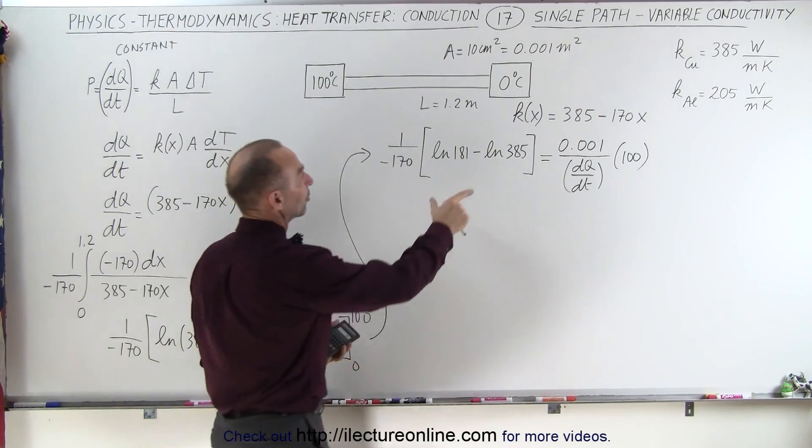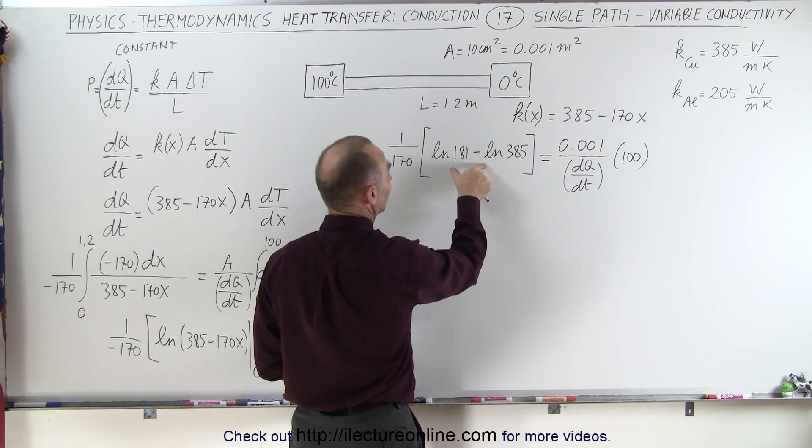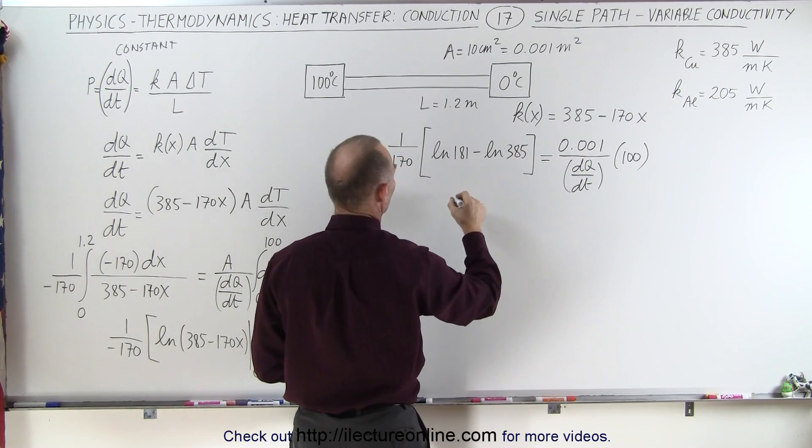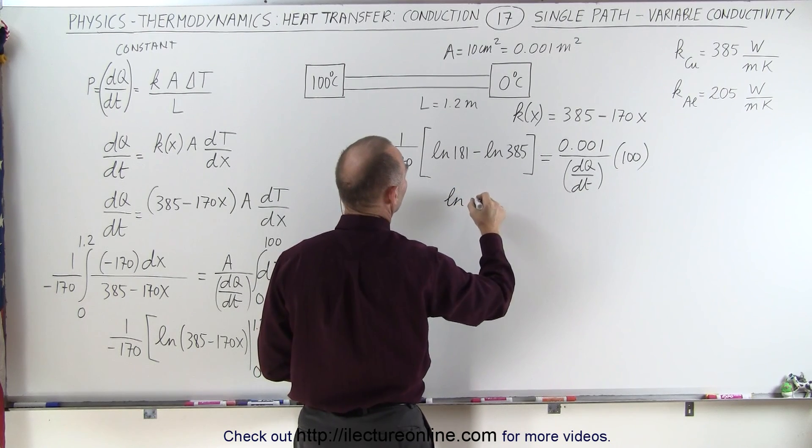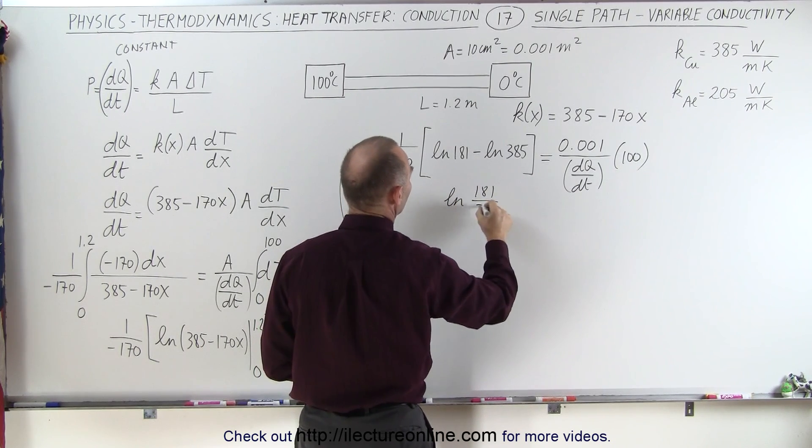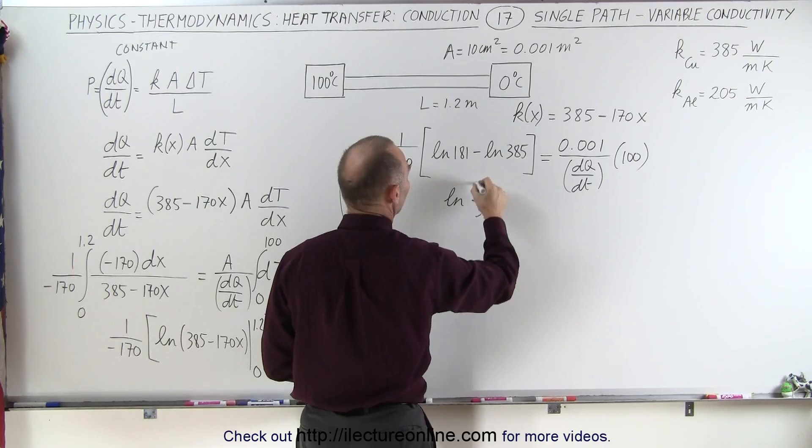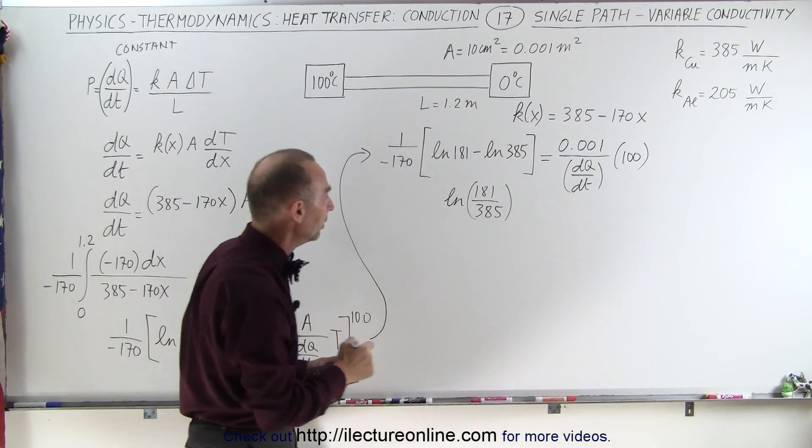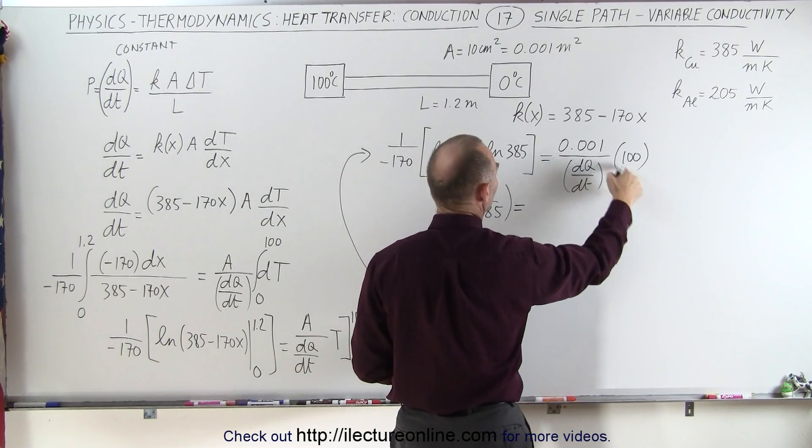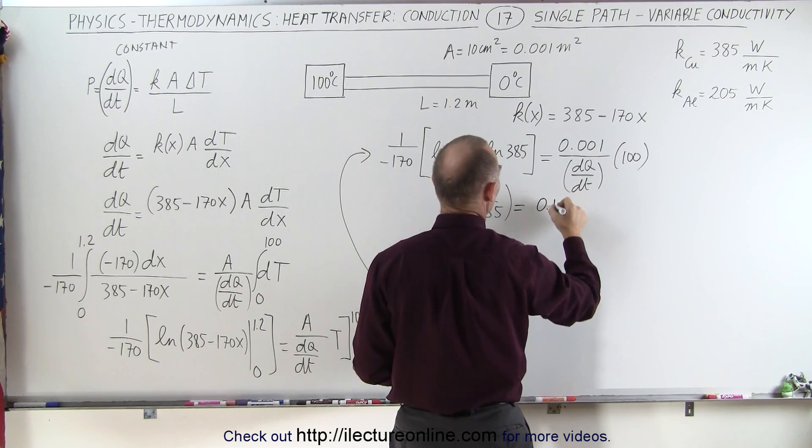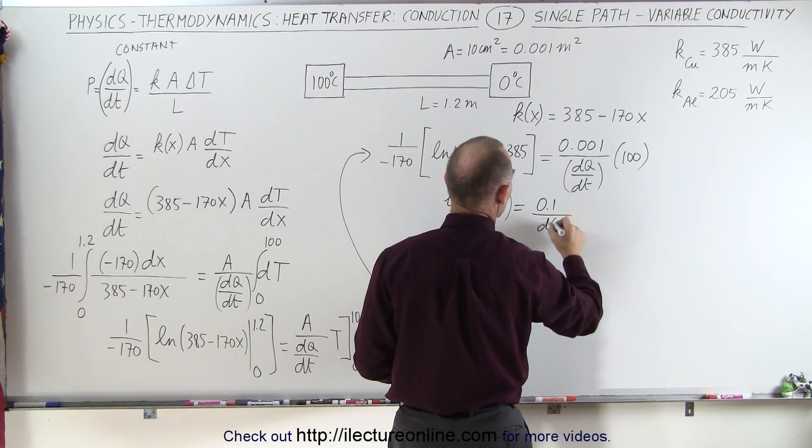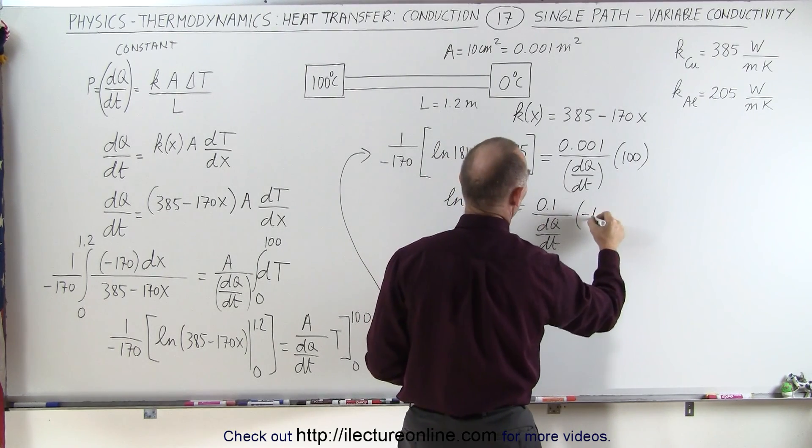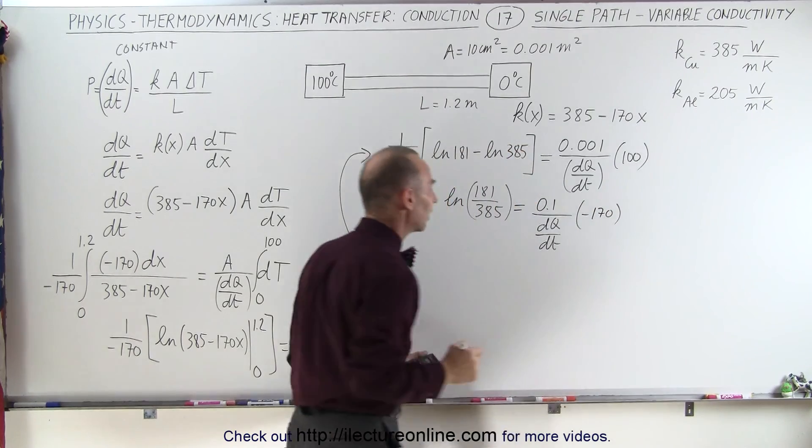All right, now next, notice that if we subtract two natural logs, that's the same as the natural log of the quotient. And we'll move this across over here. We end up at the natural log of 181 divided by 385. And notice that this will be a negative quantity because the fraction is less than 1. And that is equal to 100 multiplied times, that is 0.1 divided by dQ/dt, and multiplied times the minus 170, which I got from the other side.